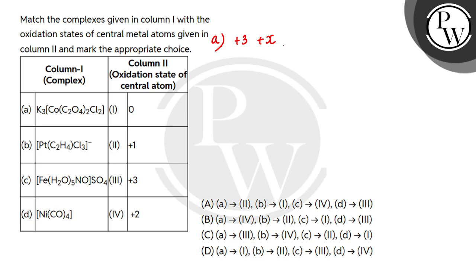C2O4 hoota hai oxalate aur ek oxalate pe hoota hai two negative ka charge, aur yaha pa 2 oxalate dee ho gae hai. So, Cl ek pe hoota hai minus one ka charge aur 2 pe ho jayega aapka minus two ka. Overall equals to zero kyunki koji charge bhi dhikha complex ke aaspas.